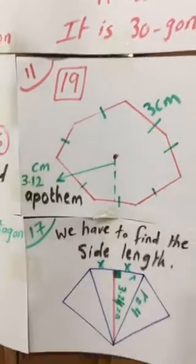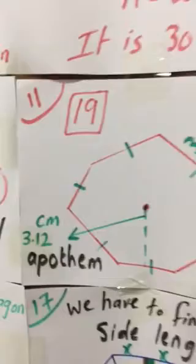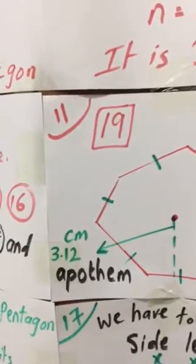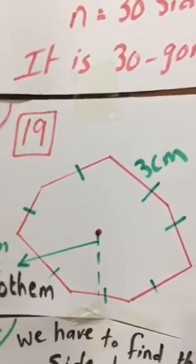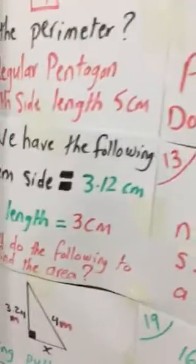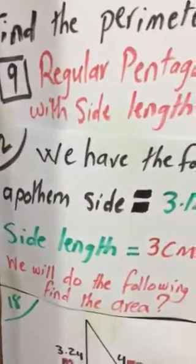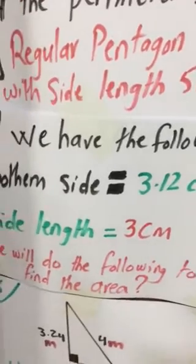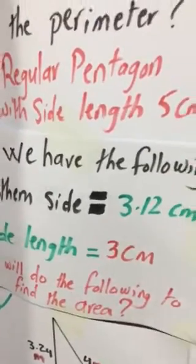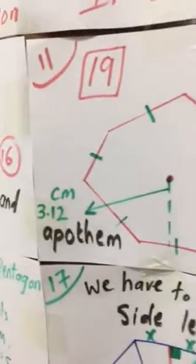And we have two more facts about this: the apothem length is 3.12 centimeters and each side length is 3 centimeters. And he is asking, yes, here are the facts: apothem size a is 3.12 centimeters and the side length is 3 centimeters. We know them from the graph, yes, 3.12 and 3.